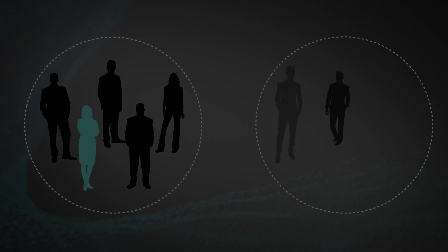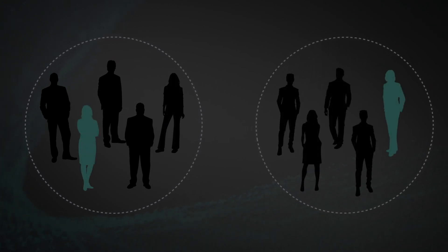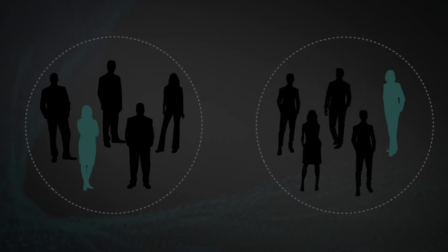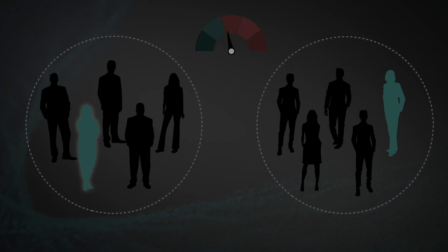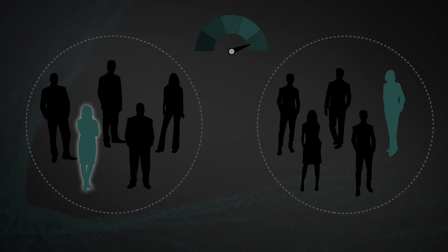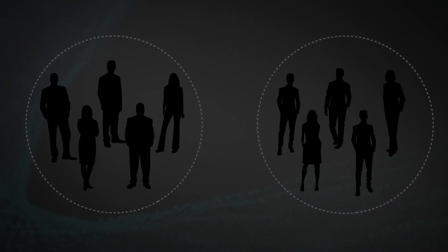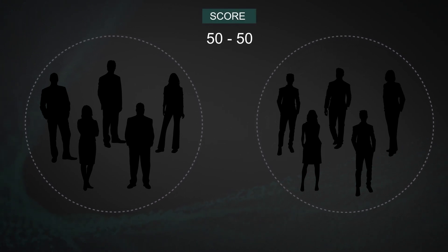And ask a question as basic as: if we take a person at random from this group and a person at random from this group, what are the chances that the first person scores higher than the second person? If both groups are the same, the score should be 50-50.